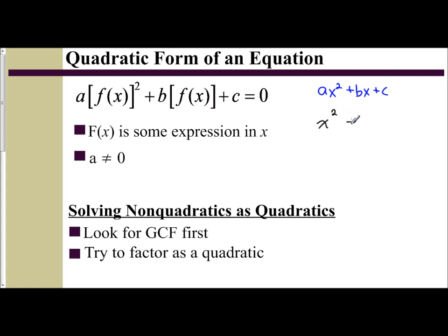The first one is x squared plus x plus c. I have x to the fourth plus x squared plus c. I have x to the sixth plus x cubed plus c. And I have x to the eighth plus x to the fourth plus c.